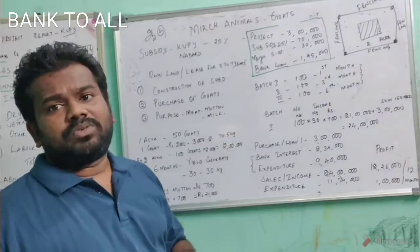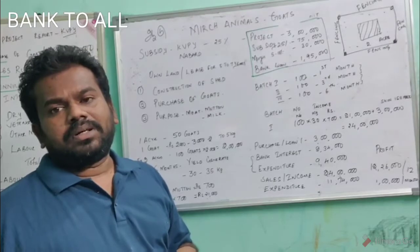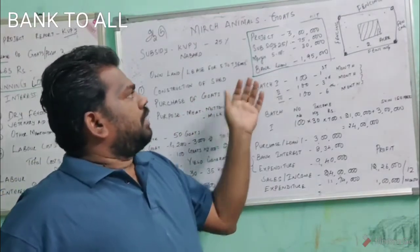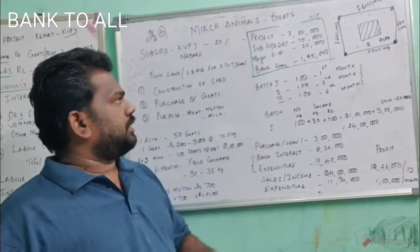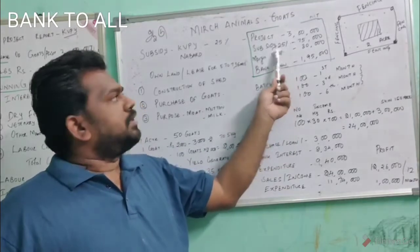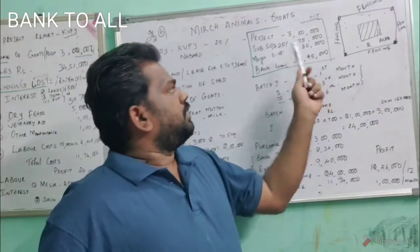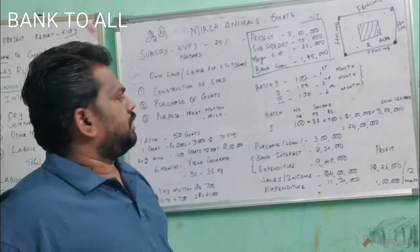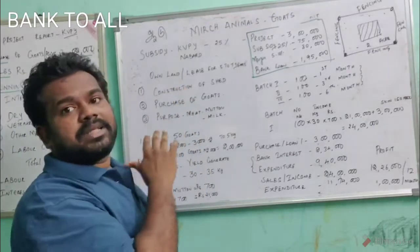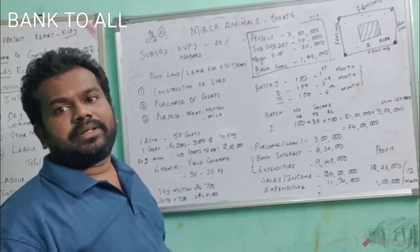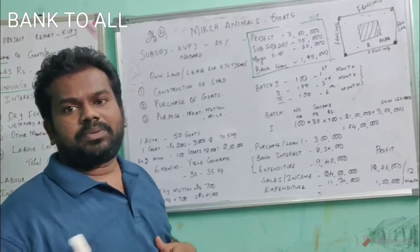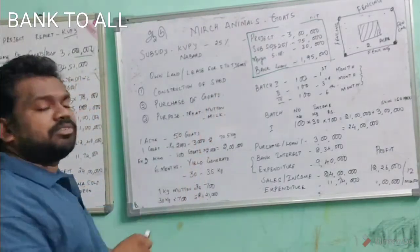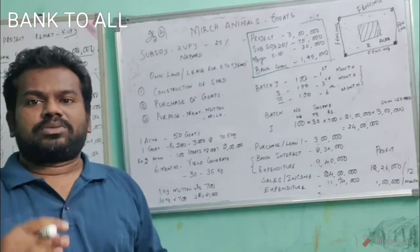For goat farming, the government is giving subsidy through NABARD or KVB. I have put a sample project of total three lakhs. The subsidy will be 25% to 33%, so taking 25%, that is 75,000. Margin money is 30,000. So approximately two lakhs will be the bank loan. For the three lakh project, I must have own land or leased land. I will repay the bank loan over two, three, or four years, and up to that period the lease will also be paid. Construction of the shed will be in bamboo — a small rice-straw shed where all the goats will sleep.